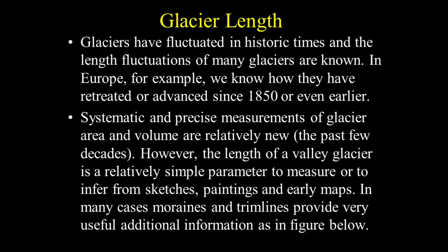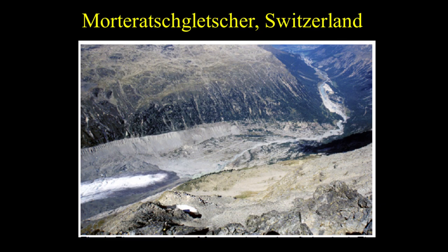Systematic and precise measurements of glacier area and volume are relatively new. However, the length of a valley glacier is a relatively simple parameter to measure or to infer from sketches, paintings, and early maps. In many cases, moraines and trim lines provide very useful additional information. From different parts of the world, there is a wealth of information on glacier fluctuations.